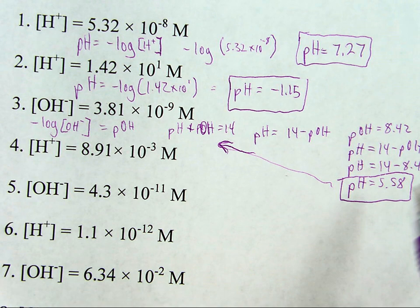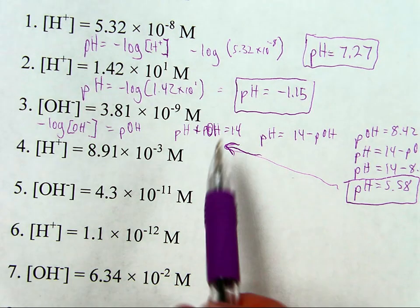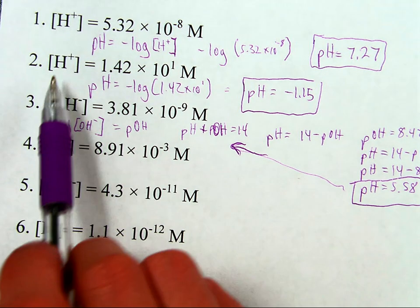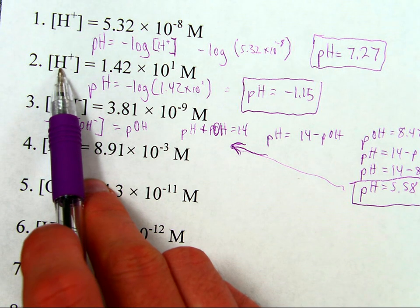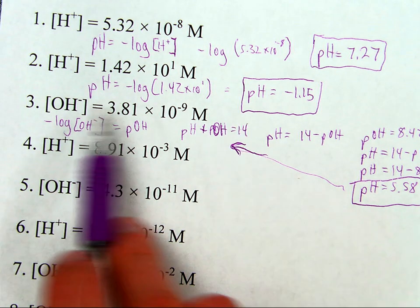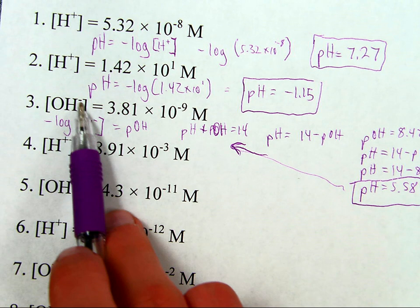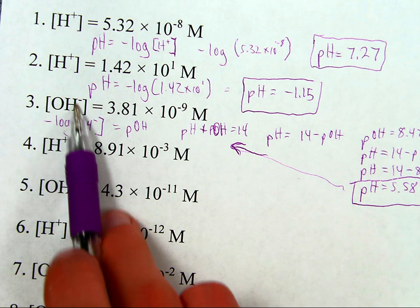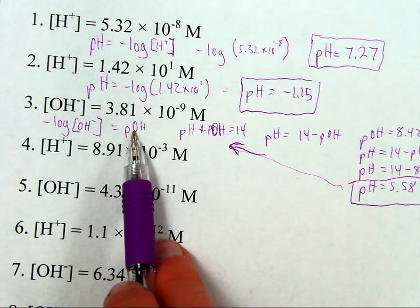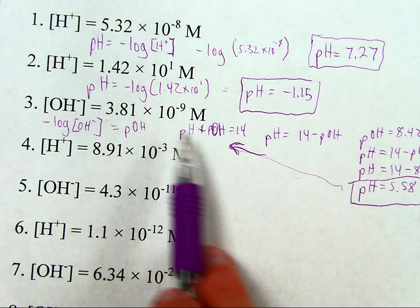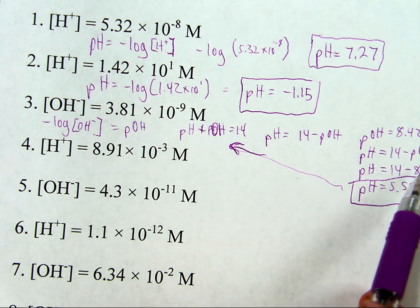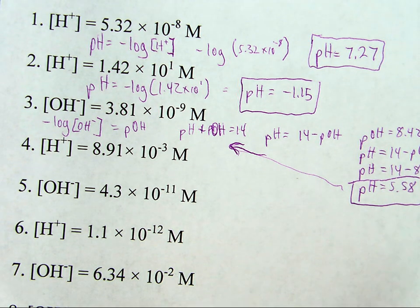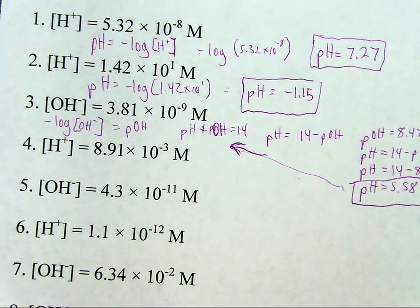If you are working with hydrogen ion concentration, negative log of that will take you straight to pH. But you've got to pay attention to what you're working with, because negative log of hydroxide will get you pOH — which is easy enough to then turn into pH because you just take 14 minus pOH. So that is one way to do it, but I should mention there is another way I could have solved this one.